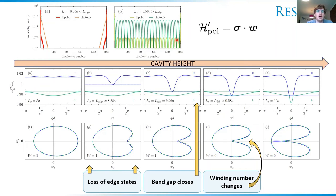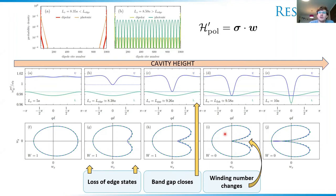This is basically the key result of this talk. We have a loss of edge states at a critical cavity height, then the band gap closes at another critical cavity height, which we see from the dispersion, and then the winding number changes, which we see from the winding number curve. The point is that these do not occur at the same time — we have broken the bulk-edge correspondence due to the strong light-matter coupling.